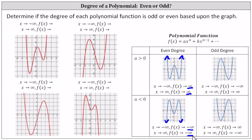If the degree is odd and the leading coefficient is positive, then for the left hand behavior, as x approaches negative infinity, f of x approaches negative infinity. And for the right hand behavior, as x approaches positive infinity, f of x approaches positive infinity. If the degree is odd and the leading coefficient is negative, then for the left-hand behavior, as x approaches negative infinity, f of x approaches positive infinity. And for the right-hand behavior, as x approaches infinity, f of x approaches negative infinity.